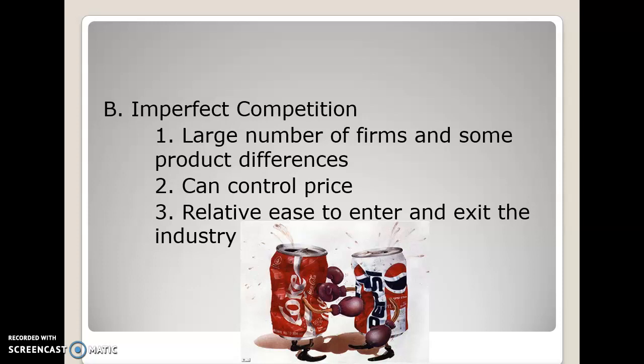Can you think of other examples of imperfect competition? Illustrated on screen are Coke and Pepsi — they're similar enough to be part of the same industry, yet different enough to control their prices and stand out from each other. There are also generic brands like RC Cola and Sam's Choice Cola, showing relative ease to enter the industry. Other examples include clothing and fast food restaurants.